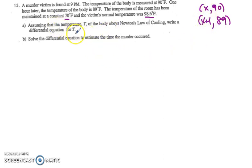Now it says write the differential equation for T. So that is going to be dT/dt equals k times T minus the environmental temperature of 70 degrees. So that's your answer for A.